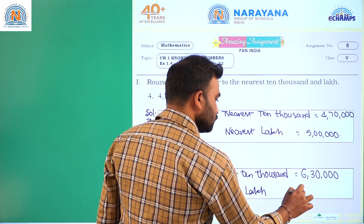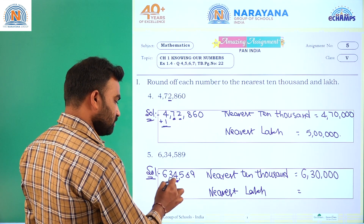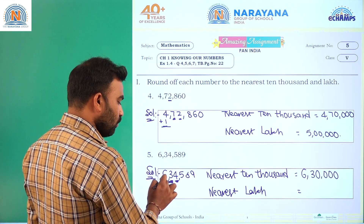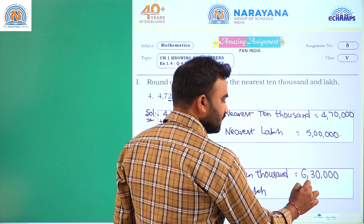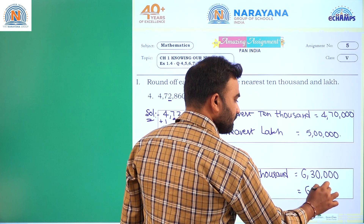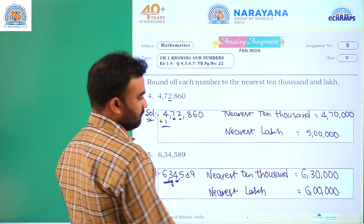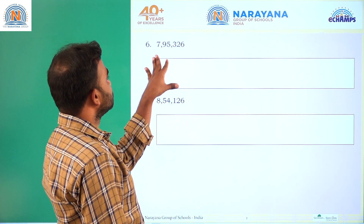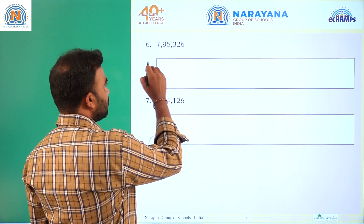For nearest lakh: the ten thousands place is three, which is less than five, so no need to add one to the lakhs place. The nearest lakh is six lakh.